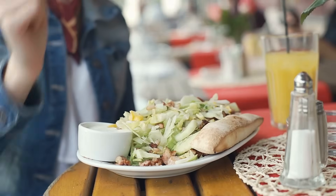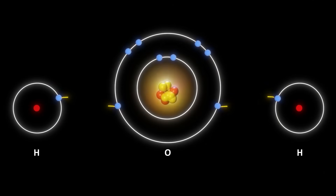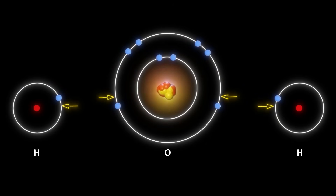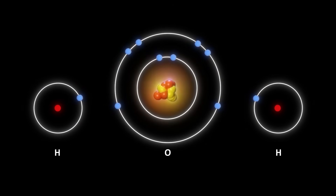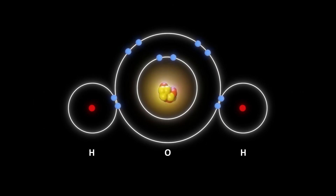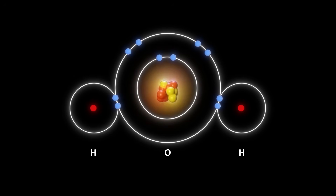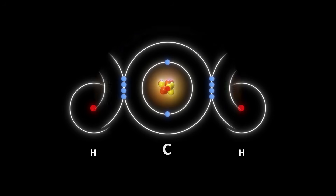In covalent bonding, electrons are not transferred but shared between atoms, forming bonds that hold molecules together — like the bonds between hydrogen and oxygen in water, H2O, or carbon and oxygen in carbon dioxide, CO2.